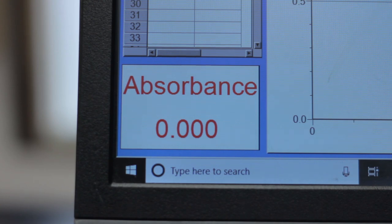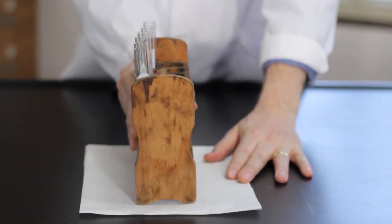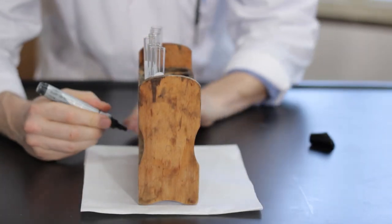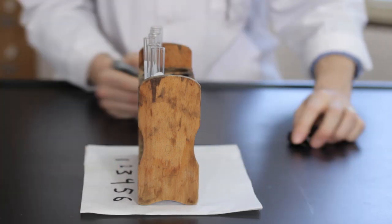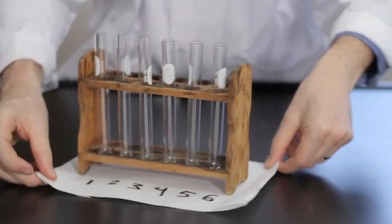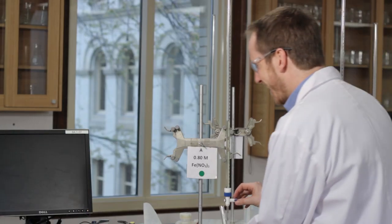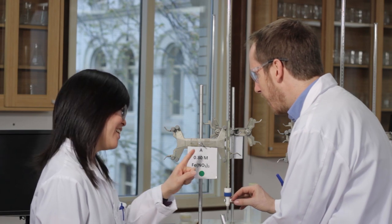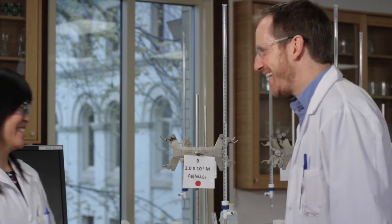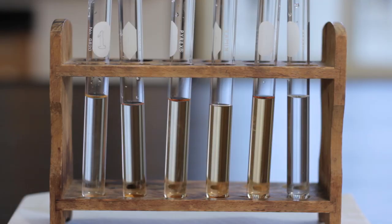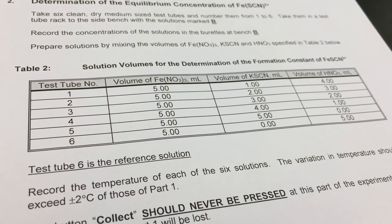Part two: determination of the equilibrium concentration of iron thiocyanate. Take six clean dry medium-sized test tubes and label them from one to six. Take the test tubes to the bench marked B and record the concentrations of the solutions provided in the burettes. In each of the six test tubes, measure out the volumes of the solutions as specified in table 2.